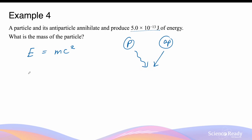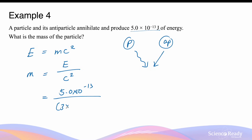We can find the total mass of the particle and antiparticle by dividing the energy produced by c squared. Because the energy is given in joules — an SI unit — we divide by the speed of light in its SI form of meters per second, so 3 times 10 to the 8, squared. This gives a combined mass of 5.6 times 10 to the minus 30 kilograms.